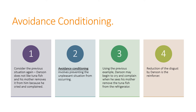Avoidance conditioning involves preventing the situation from ever occurring. Using our previous example, Danson may begin to cry and complain when he sees his mother even take the tuna fish out of the fridge — before she's even made the sandwich. As soon as he walks into the kitchen he begins to cry so his mother won't give him tuna fish. He can escape the situation when it's presented, or avoid the whole situation entirely before it occurs.